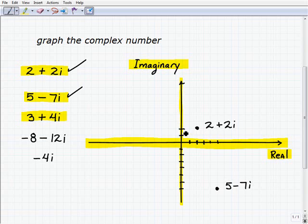1, 2, 3, 4. So that is going to be right there. 3 plus 4i.